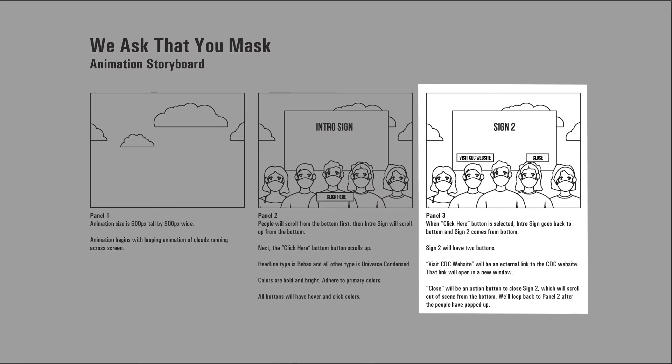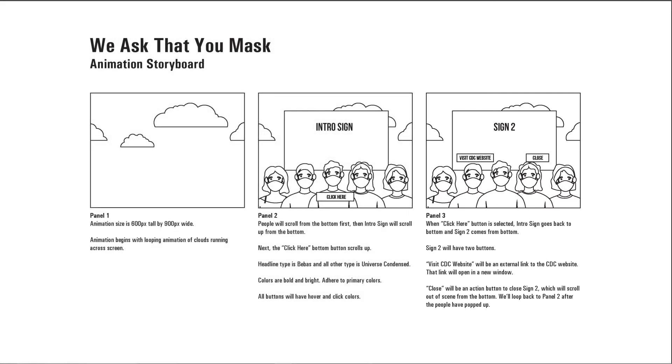Let's look at panel three. When the click here button is selected, the intro sign goes back to bottom and sign two comes up from the bottom. Sign two will have two buttons: Visit CDC website — which has an external link to the CDC website opening in a new window — and Close, which is an action button to close sign two, scrolling it out of the scene from the bottom. We'll loop back to panel two after the people have popped up. Nothing is left to chance when we create our storyboard, because it eliminates all the questions prior to building. Once we've got that, we're ready to move into our Illustrator piece.